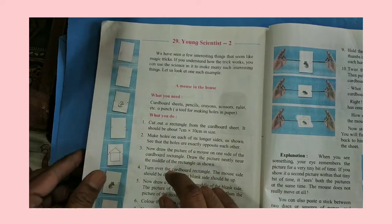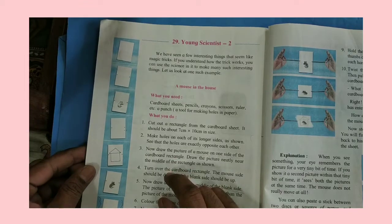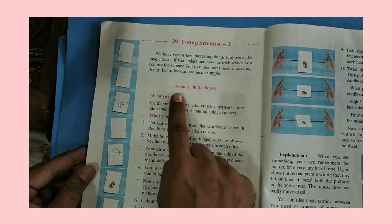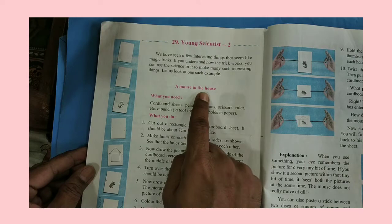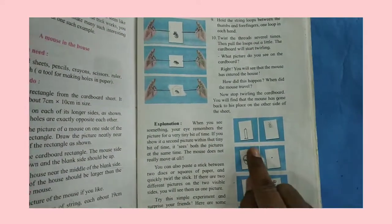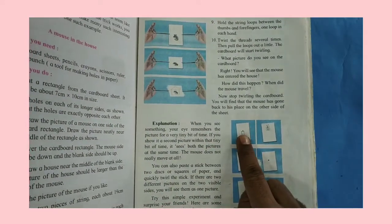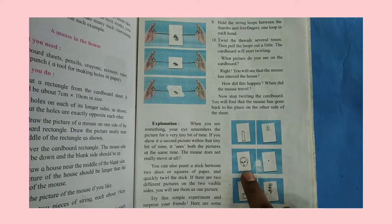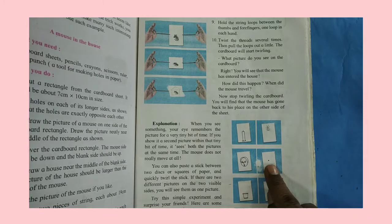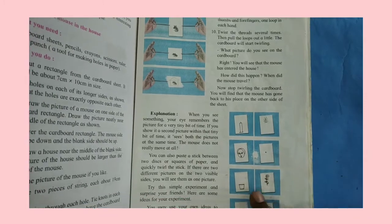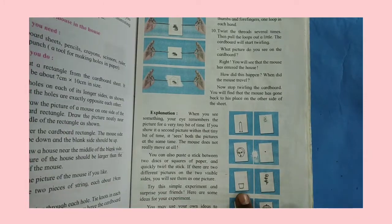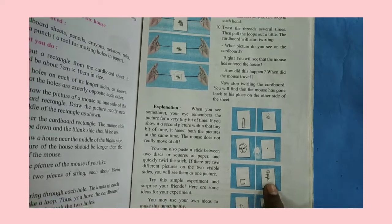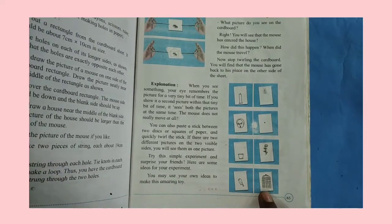Here many choices are given, whichever you feel very easy you can do. First one is a mouse in the house, second one you can see here, a candle, a burning upper part, face of the girl and this dot bindi, this flower pot and flower, bird in the cage.